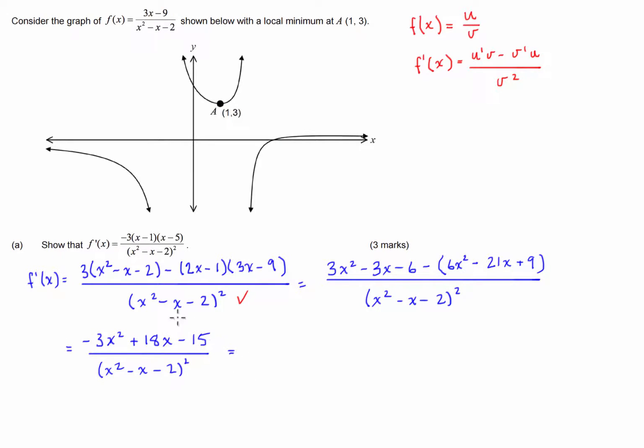Now with the top here, if we're going to make it look like this, I'm going to take out this negative 3 so we can look at the function we're trying to end up with and use that as inspiration for where we're going to go next. We have this negative 3 out the front, so I'm going to factorize the numerator by negative 3. So that's going to be, inside the bracket, we're going to have x squared, negative 3 times negative 6 is positive 18x, and negative 3 times 5 is negative 15, and that's all divided by x squared minus x minus 2, all squared.